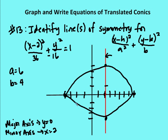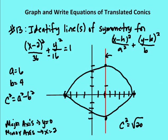I can also identify the foci of the ellipse. I know that c squared equals a squared minus b squared, so c squared equals 36 minus 16, which equals 20. So c equals the square root of 20, which is approximately 4.5. I mark off about 4.5 units in either direction along the major axis from the center to identify the locations of my foci.